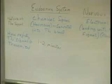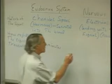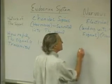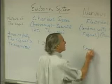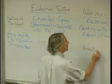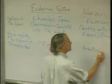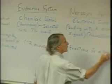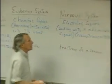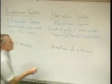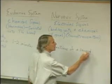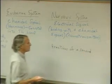Whereas the nervous system is very rapid — just fractions of seconds. It's very quick to get the nerve signal to some organ.